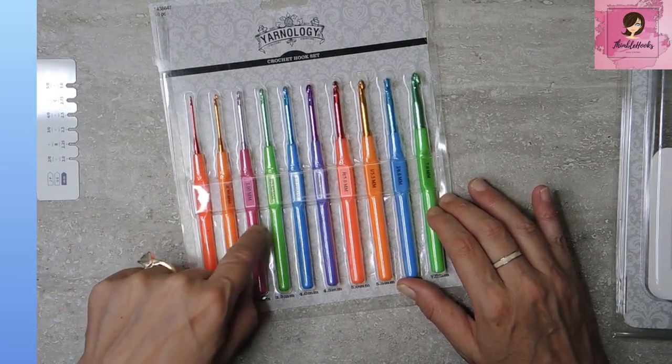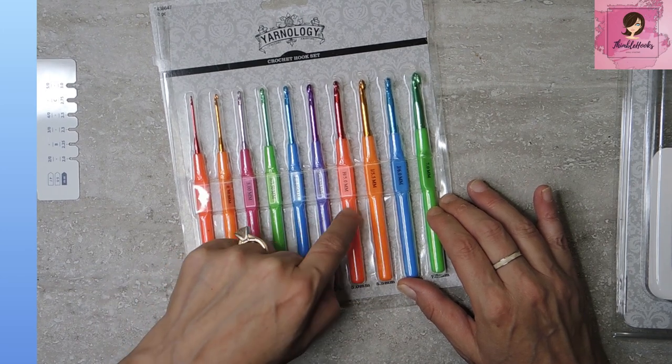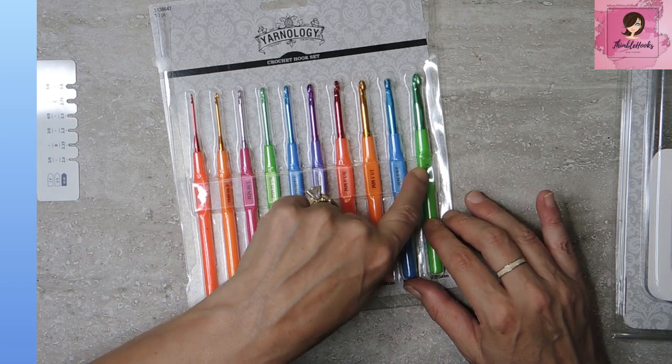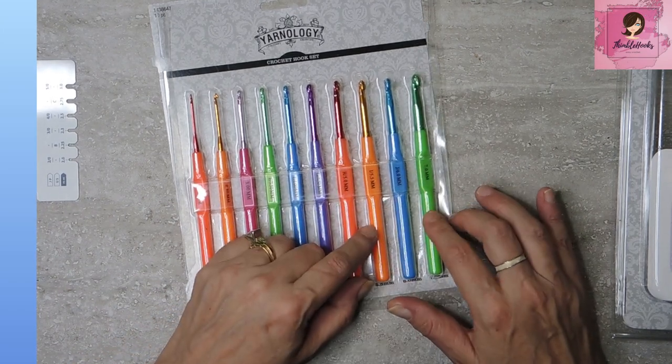A two millimeter, two and a half, a three, a three and a half, a four, four and a half, a five, five and a half, and a six, and the extra one is a seven. So there's a seven millimeter hook in here, which doesn't come with most sets. They usually stop at six, or they jump straight to an eight. Not a lot of sevens floating out there in sets, so that's kind of cool.